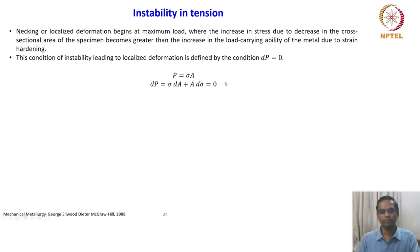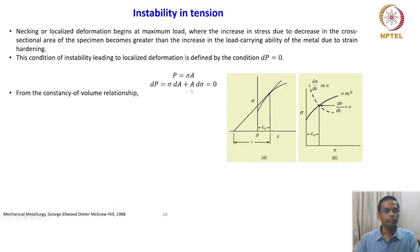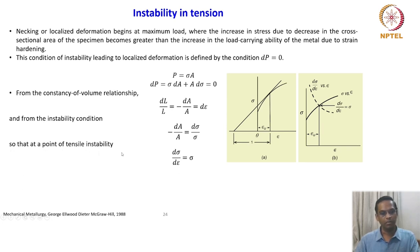We can use this instability condition to derive a few more equations. P = σA, and dP = σdA + Adσ = 0. From the constant-volume relationship, dL/L = −dA/A = dε. Applying the instability condition dp = 0 gives −dA/A = dσ/σ. So at the point of tensile instability we reach the equation dσ/dε = σ. This is a very, very useful and very important relation.